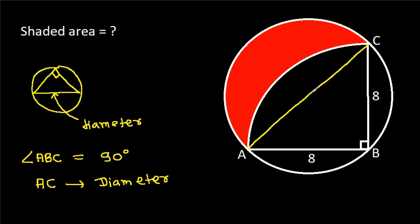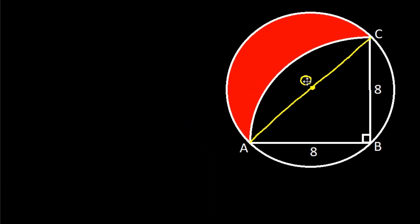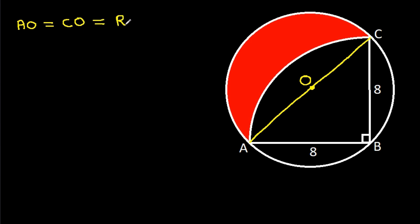Suppose the center of the circle is O. Then AO will be equal to CO, which is the radius R of the circle. So AO is R and CO is R.